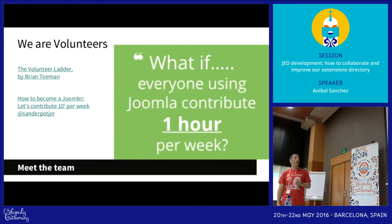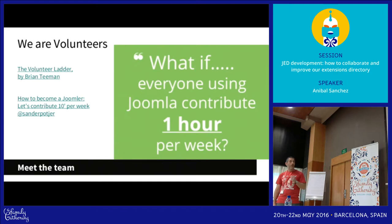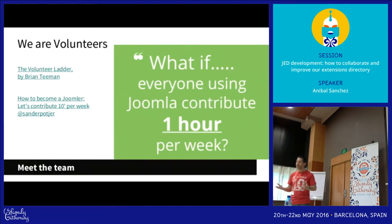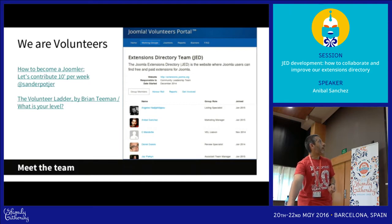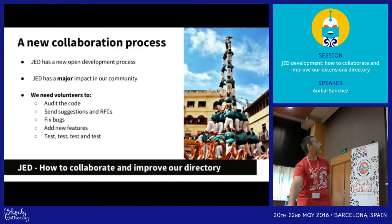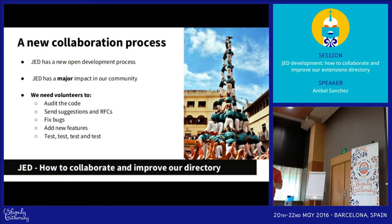The idea is that we need only one hour per week. If everyone in this room collaborates with one hour of their life for JET, we are going to really improve the site. We publish our monthly reports in our group in the volunteers portal — you can check what we publish every month. Now we are going to start talking about the process itself.